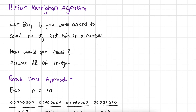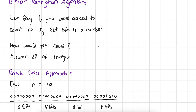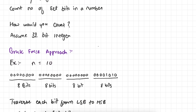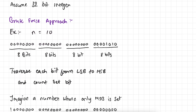Let's say you were asked to count the number of set bits in a number. How would you count the number of set bits in a number? We assume that there are 32 bits in a number. Obviously your answer will be the brute force approach. Let's say for example if n is equal to 10. This is the binary representation of number 10 in 32-bit form.